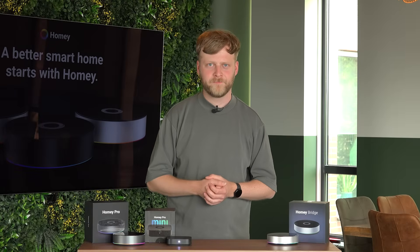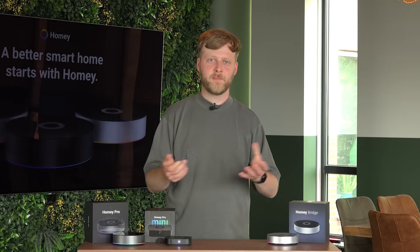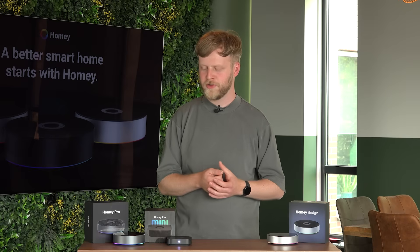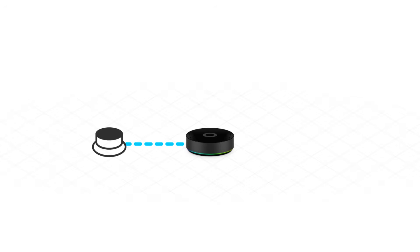With Homey Pro it works differently. You have the same Zigbee button connected directly to Homey Pro over Zigbee, and the Wi-Fi bulb connects to your Wi-Fi network. Afterwards it can either be controlled through the manufacturer's cloud or possibly on the local network, depending on the device. When you press the Zigbee button, it sends its command directly to Homey Pro, which processes that command and sends it directly to the light bulb — turning it on. That's a real-life scenario on both Homey Cloud and Homey Pro.